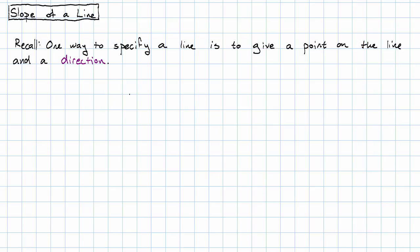We're now ready to talk about what we call the slope of a line. Recall that one way to specify a line was to give a point on the line and a direction. The slope of a line is one way of describing the direction that the line goes in.